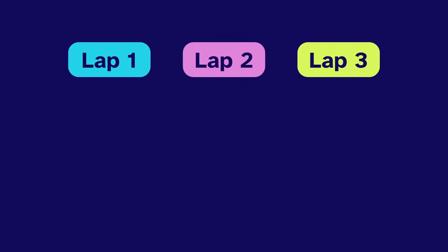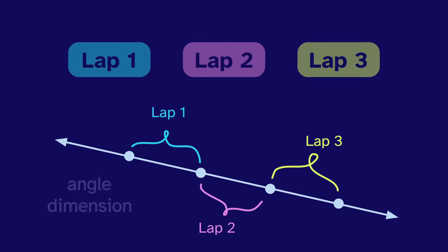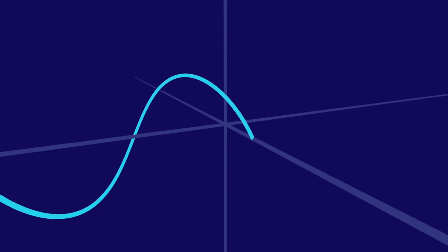We're currently using color to distinguish the different laps, but we could instead use a new dimension, an angle dimension. Let's do this first with the input shape, the circle. In two dimensions, we just draw around the circle as the angle increases. But in three dimensions, we also move along in the angle dimension, which gives a spiral.